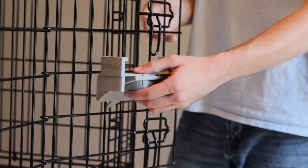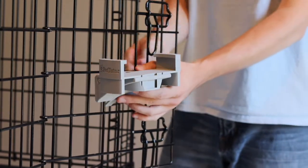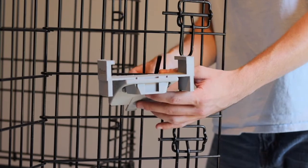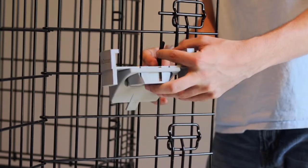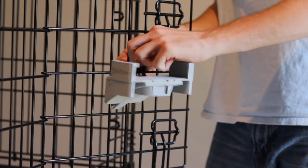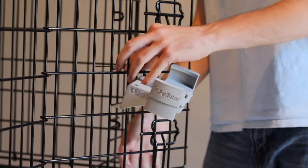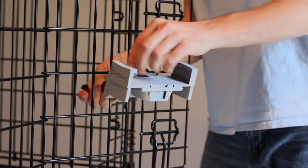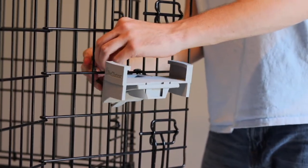You want to align that so that the holes where the zip ties or tie wraps will be located are close to that horizontal bar. We're going to put them together very loosely at first and then we'll tighten them up and make sure the end of the zip tie is pointed out of the crate and snugged up, and then we'll add the feeder here in just a minute.